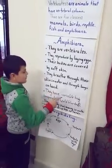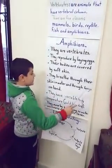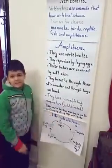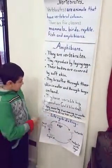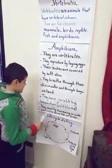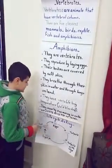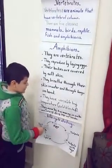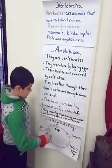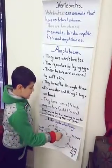They breathe through their skin in water and through lungs on land. They have a variable body temperature called cold-blooded. They move by swimming in water and jumping using legs on land.